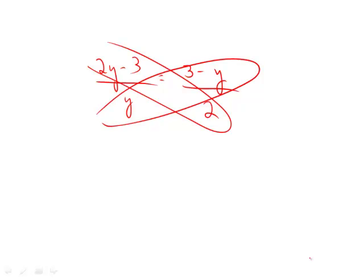So we do this guy first. We get 2 times 2y, which is 4y. 2 times negative 3 is minus 6. We're going to multiply y by both of these, and we're going to get 3y minus y squared.